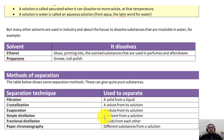Simple distillation is used to separate a solvent from a solution — here our aim is to recover the liquid. Fractional distillation separates liquids from each other when we have a mixture of liquids, based on their different boiling points — we heat them up until we reach certain boiling points to separate them. Chromatography separates solids that are dissolved in one solvent.